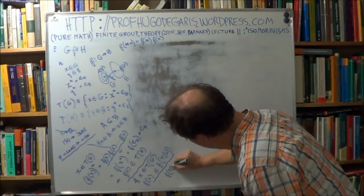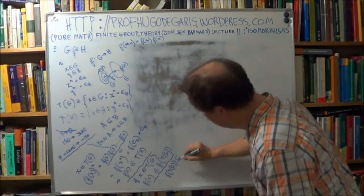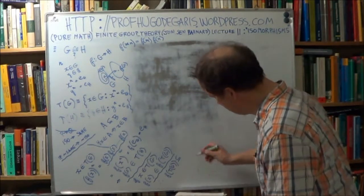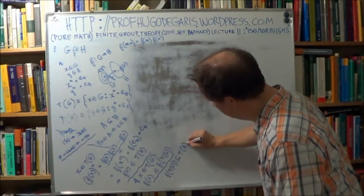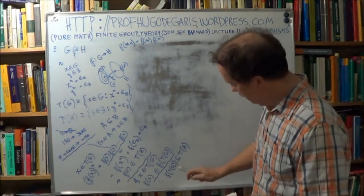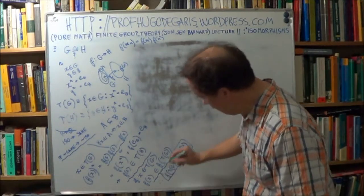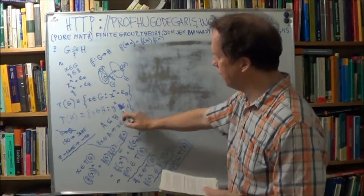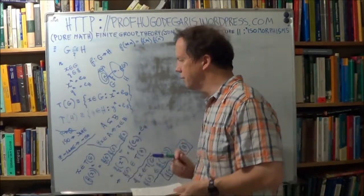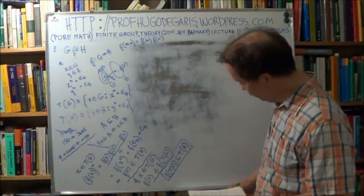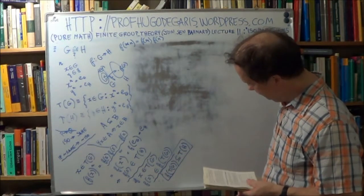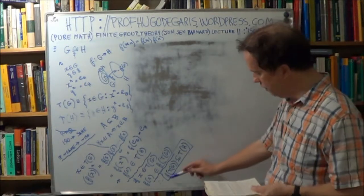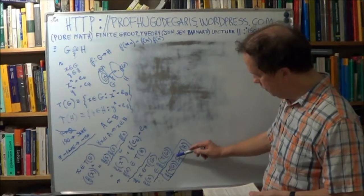F of T(G) is a subset of T(H). So remember, this is like half of the result that we need. We'll do a similar analysis for this set — take a Y belonging to this set and do something similar, and we'll get the reverse. We'll get T(H) is a subset of this, and then we put the two together and we get F of T(G) is actually equal to T(H).